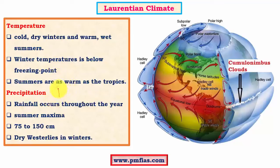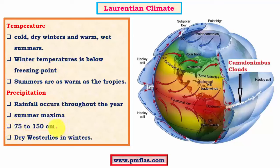Regarding precipitation, this climate is represented by D and F, where F stands for wet type, so this region receives rainfall throughout the year. There are regional variations based on whether the climate exists in the Northeast American or Asiatic region. The most important feature is summer maximum rainfall — most rain occurs in summer months, while winter rainfall is comparatively low. Average annual precipitation is about 75 to 150 centimeters, well distributed throughout the year, aiding natural vegetation.